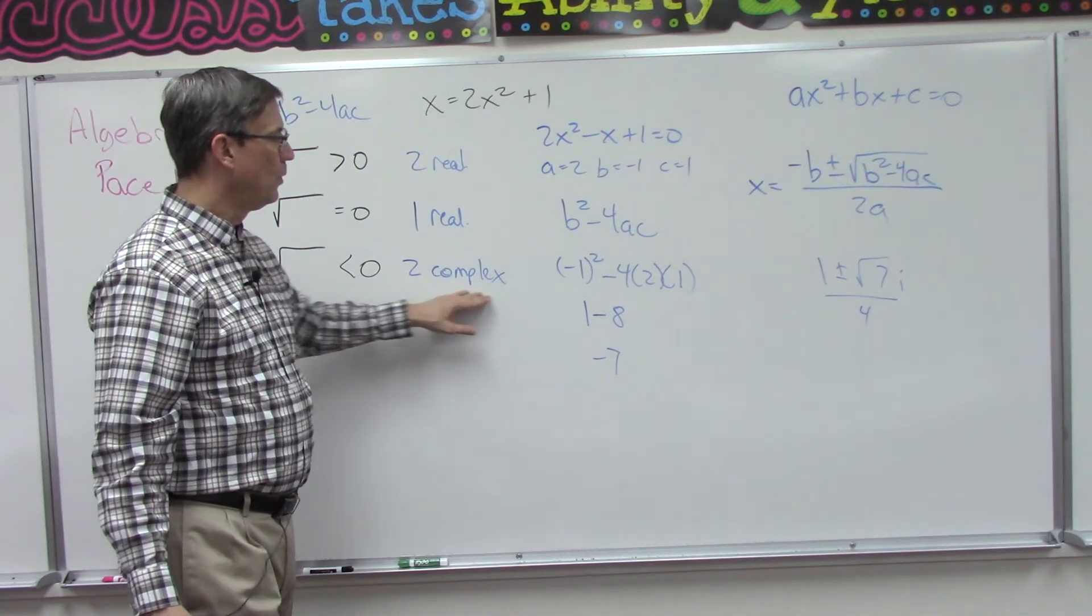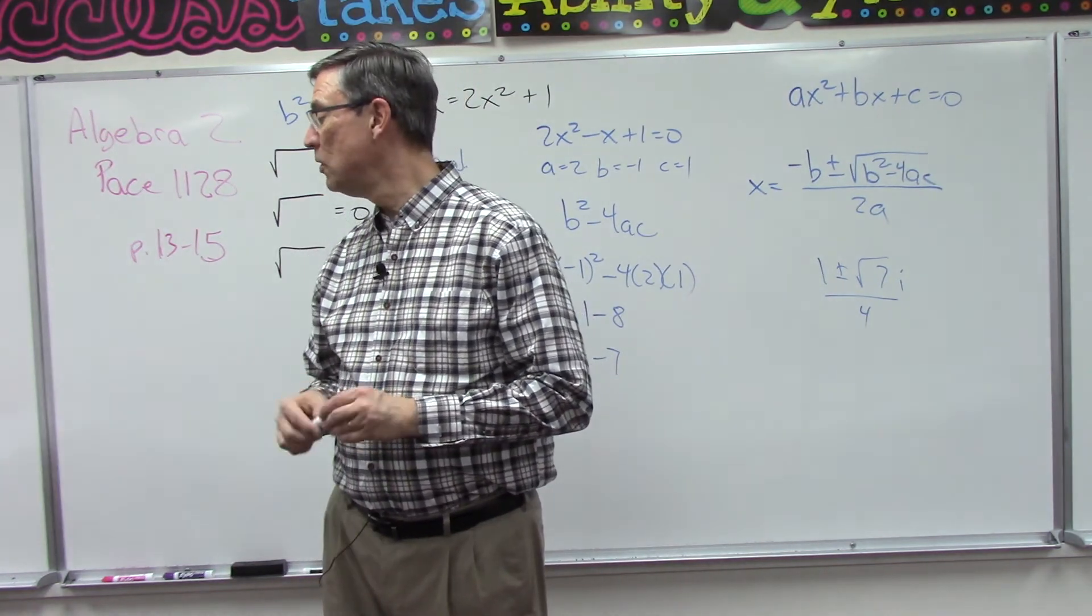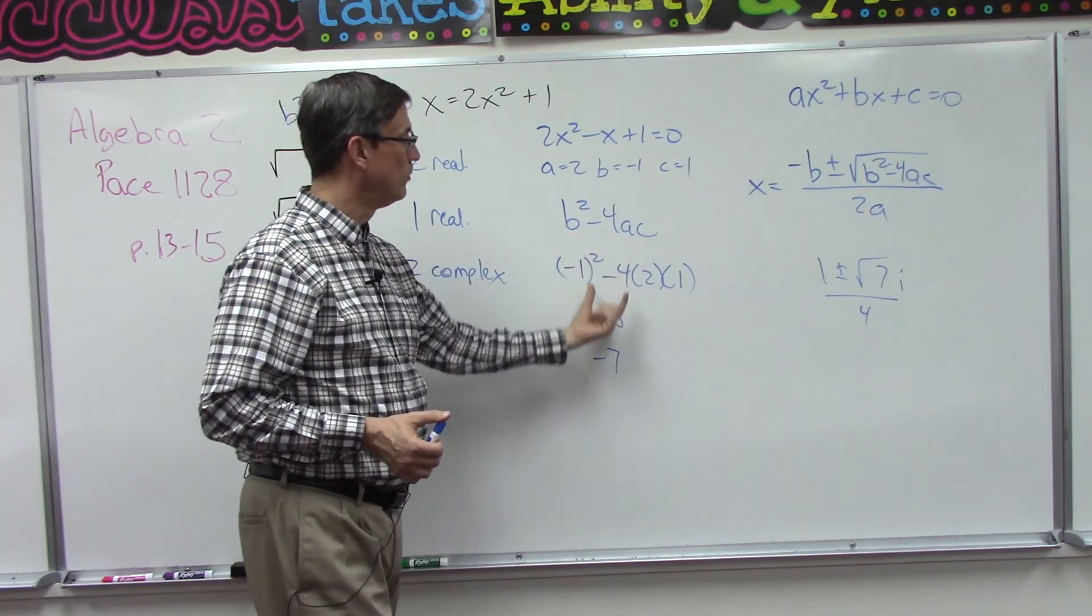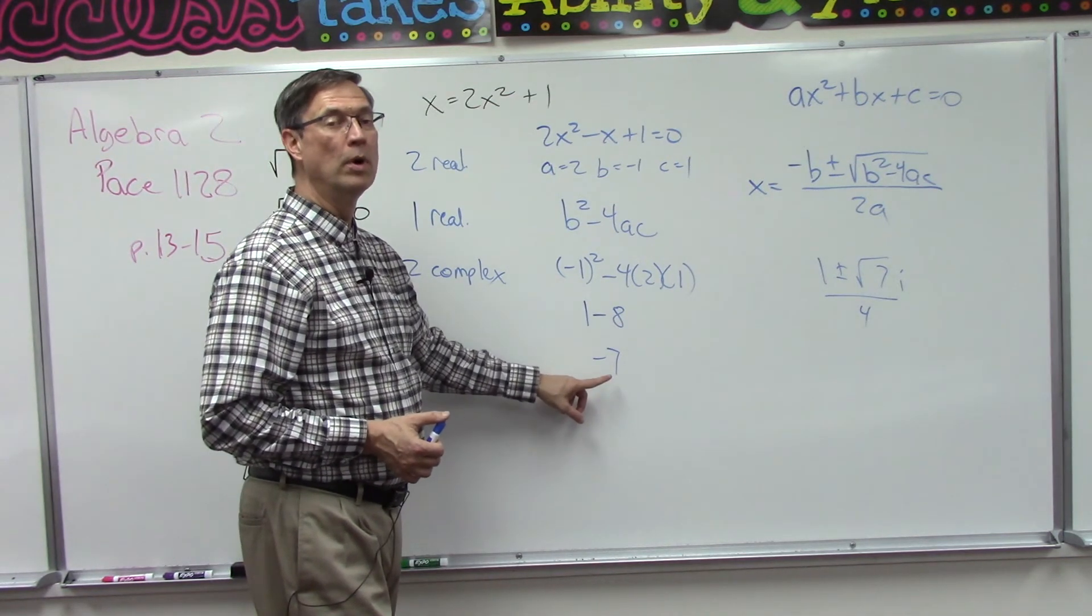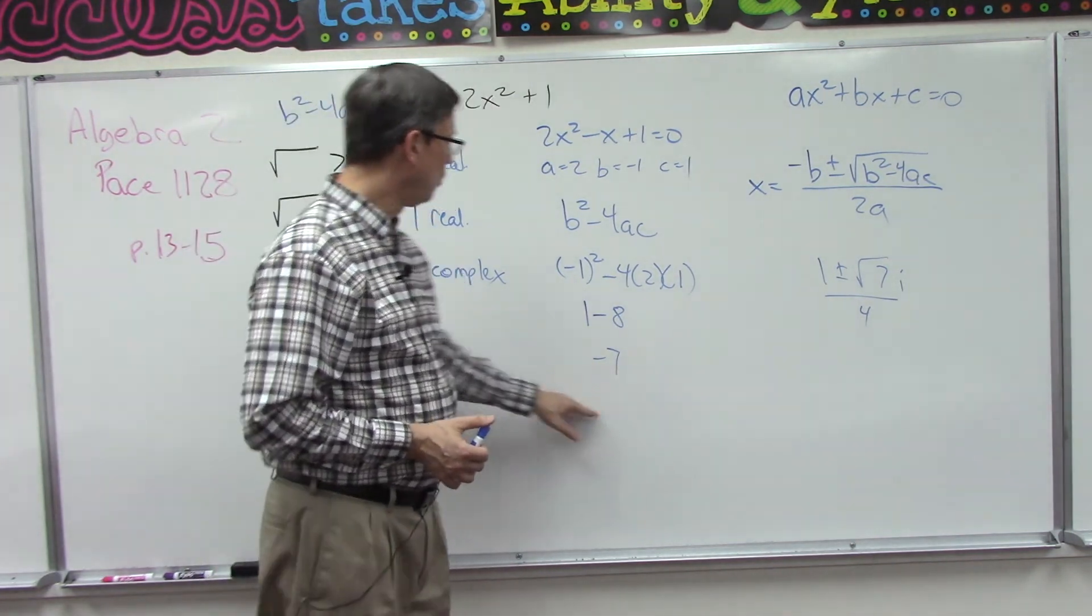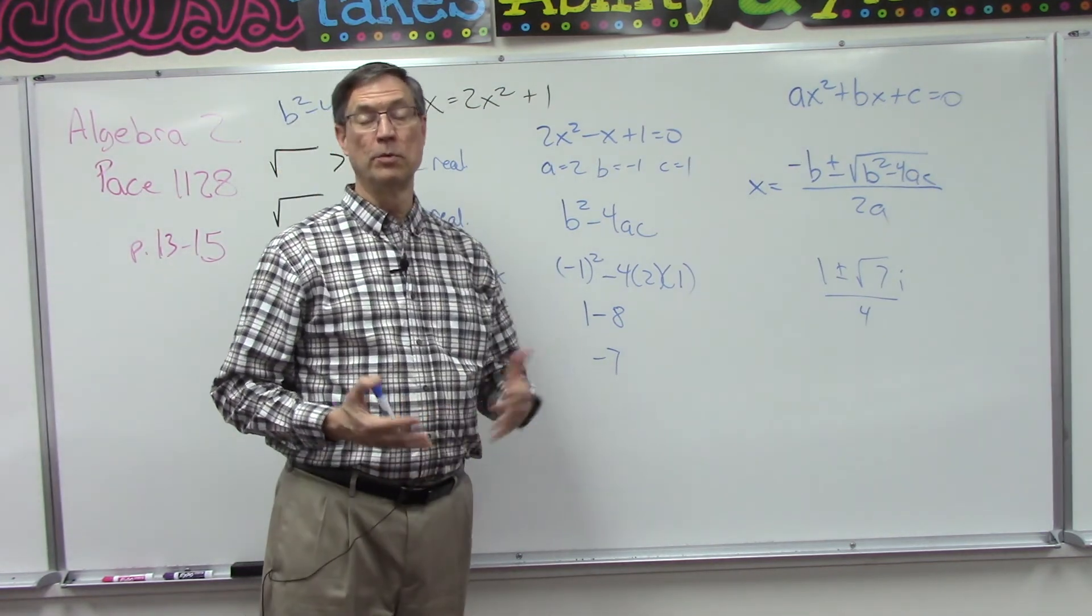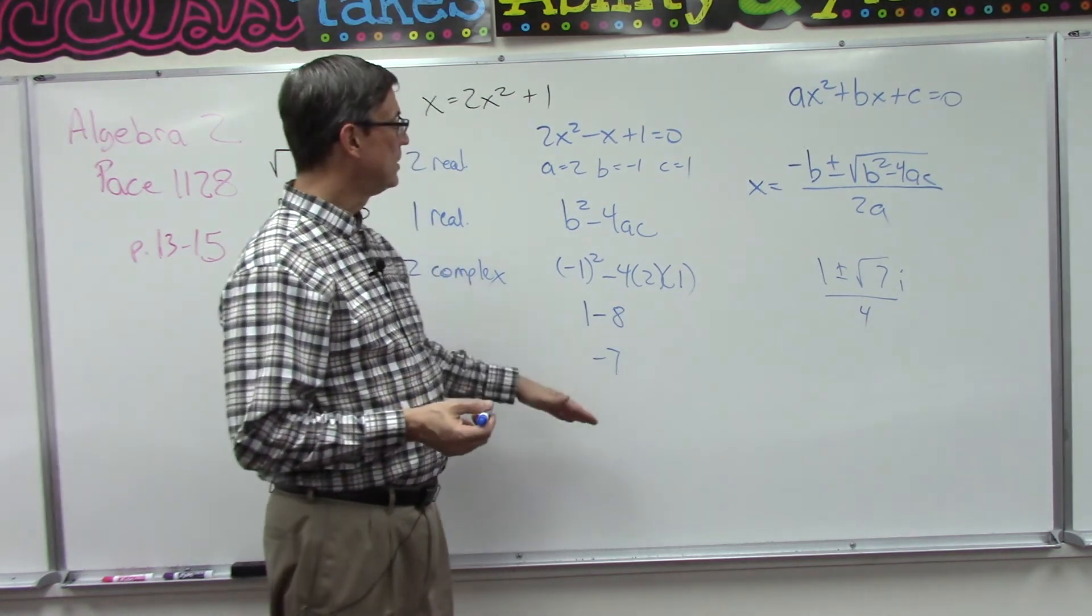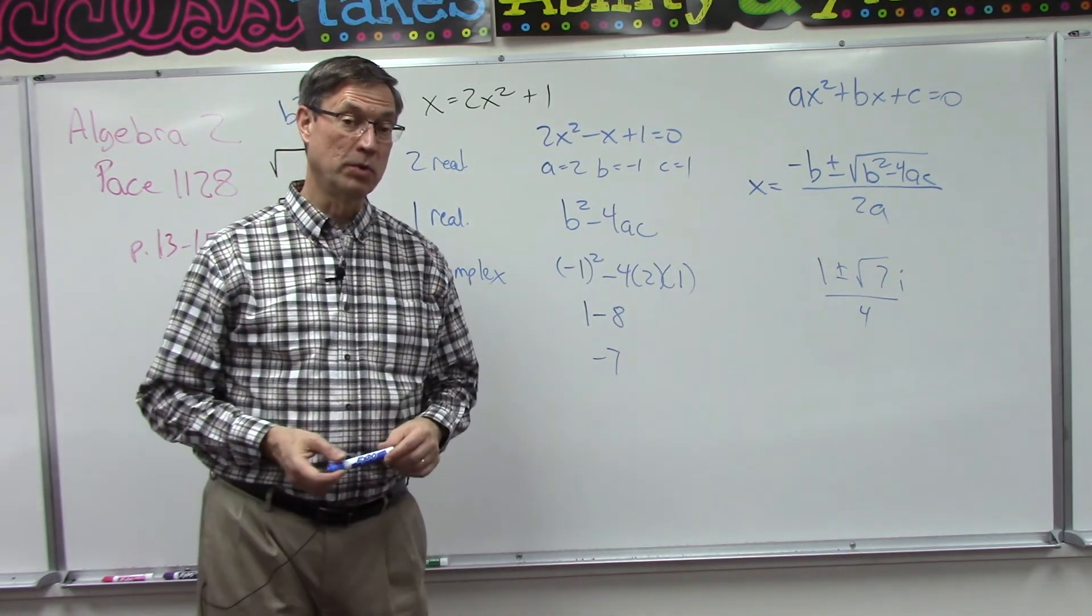So really, on this page here—and you have twelve problems to do—you're just solving this part of it far enough down to see if you get a positive number, a negative number, or zero. And then once you know that, you look over here and then you write down in bold print either two real number solutions, one real number solution, or two complex solutions. So in a way it's like a multiple choice. You have only three possible answers for your final answer, although the step before it they will have solved this to get a number, and that is in the score key as well.